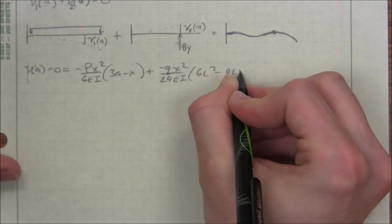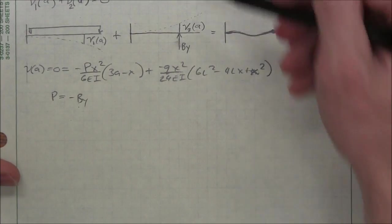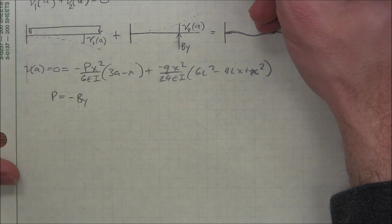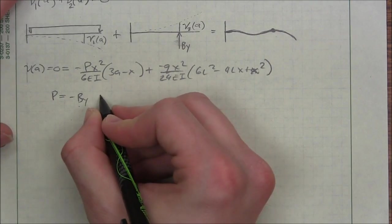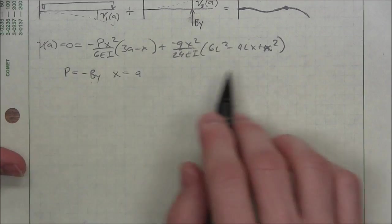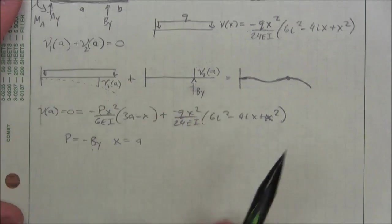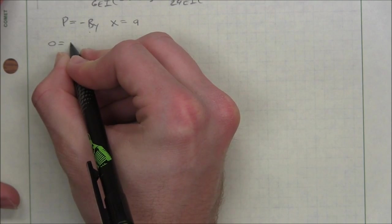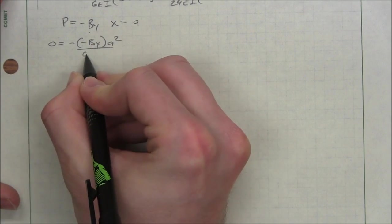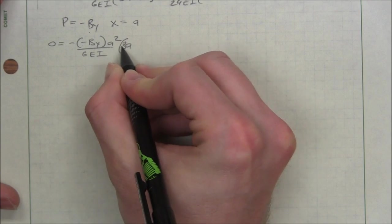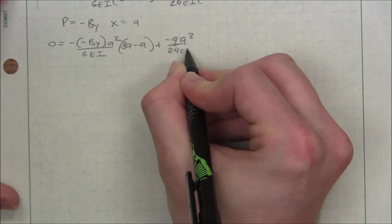So for P, I'm going to plug in a negative BY. And that's because P was defined as positive downward and our BY is up. So that's going to be a negative I'm replacing it with. Our X is going to be at A. Remember that we're trying to solve for what BY is so that statics can tell us what the other two are. 0 equals negative BY A squared over 6EI, 3A minus A plus a negative QA squared, 24EI, 6L squared minus 4LA plus A squared.